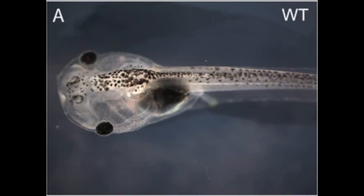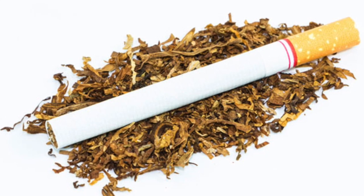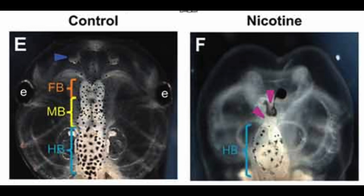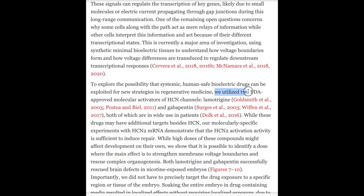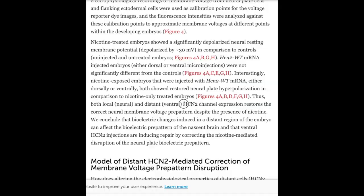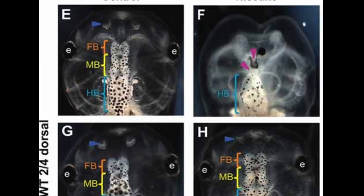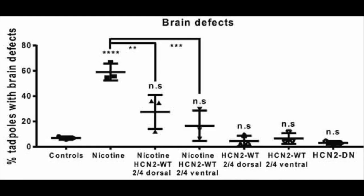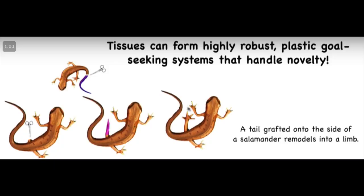And now for one more experiment on these tadpoles. If you take nicotine and expose it to a developing tadpole, you'll cause brain defects — you can see this because the brain on the right is not nearly as developed as the one on the left. But if you take two FDA-approved molecular activators of HCN channels, which are just voltage-gated channels in these tadpoles, this restores the correct neural membrane voltage patterns despite the presence of nicotine. You can see this because now the brains on the right and the left look the same, and we've restored their brain function.